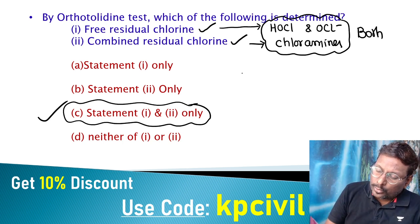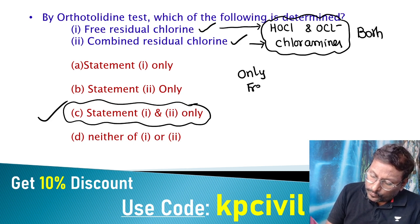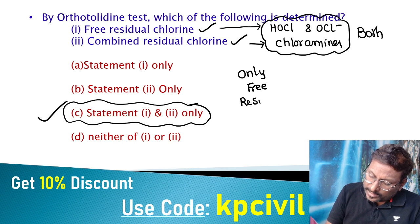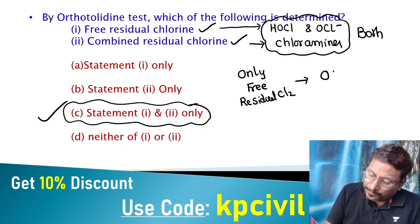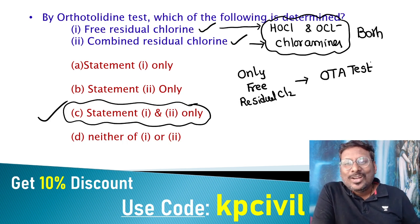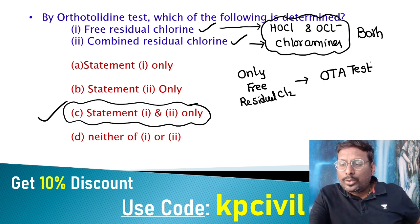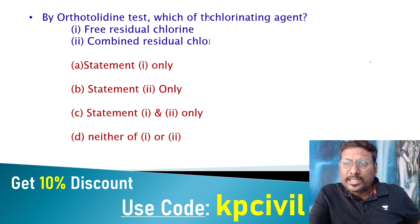If you want to find out only free residual chlorine, you use the OTA — Orthotolidine Arsenate test. The OTA test is specifically for estimating only free residual chlorine.